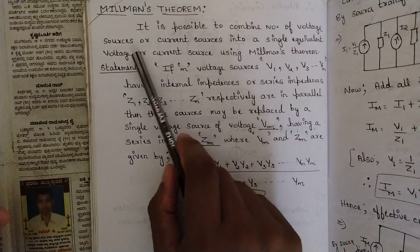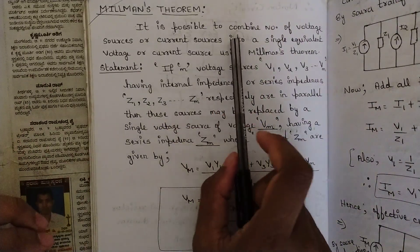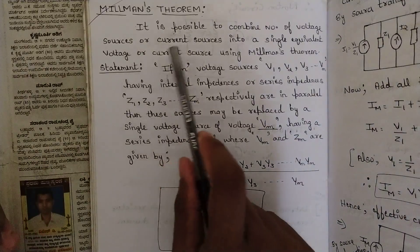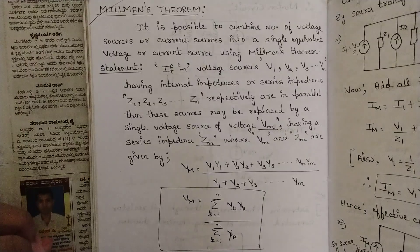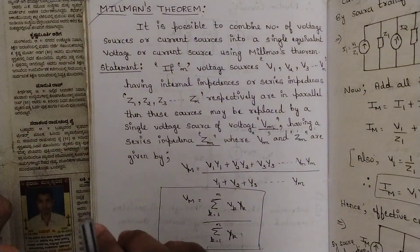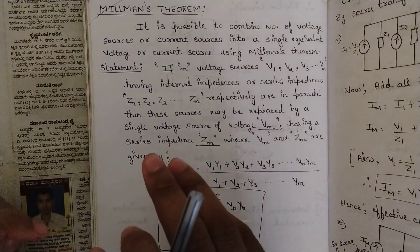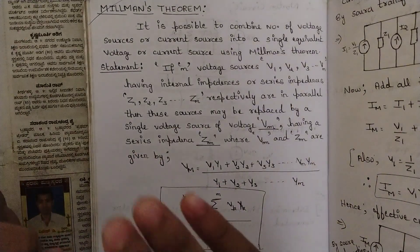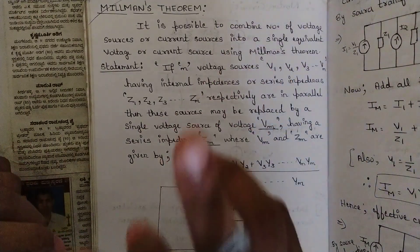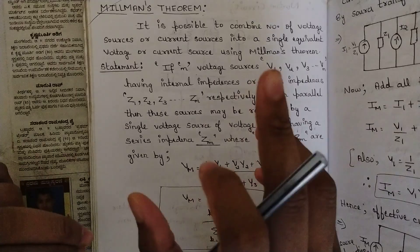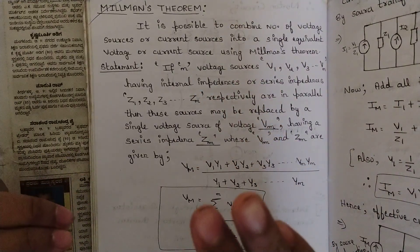So this is Millman's theorem. The statement is: it is possible to combine a number of voltage sources or current sources into a single equivalent voltage source or current source using Millman's theorem. So in a complex network having multiple voltage or current sources, the task in Millman's theorem is to convert those multiple sources into a single equivalent voltage or current source.